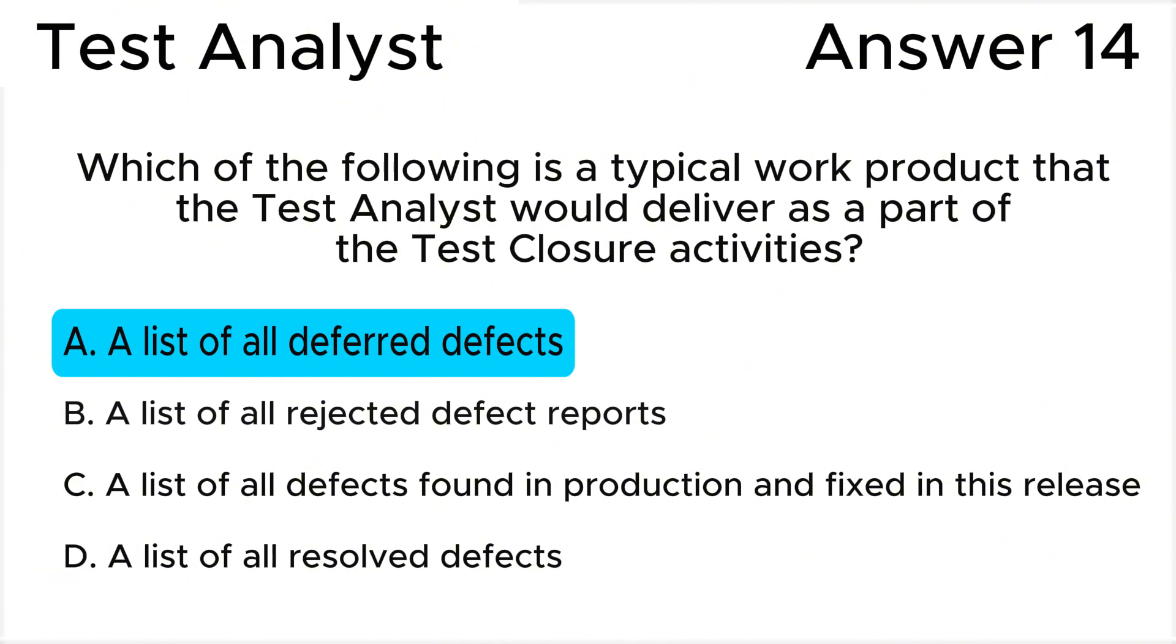In summary, the primary focus during test closure is on summarizing the testing effort, documenting the outcomes, and providing relevant information for process improvement. A list of deferred defects is a common work product in this context, as it communicates issues that were identified but not addressed in the current release.